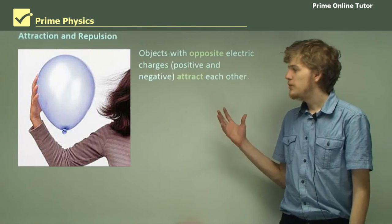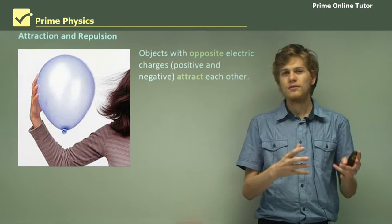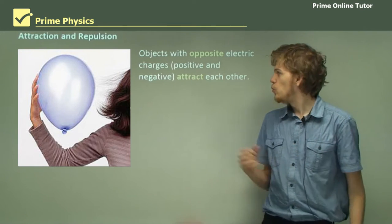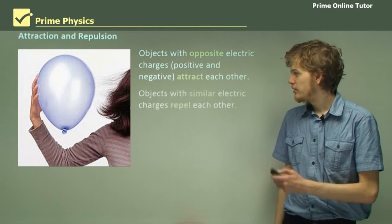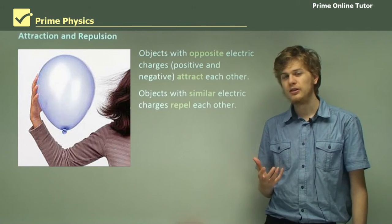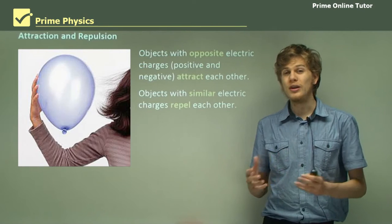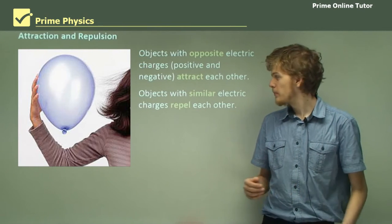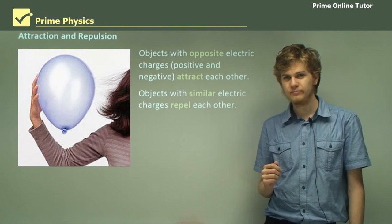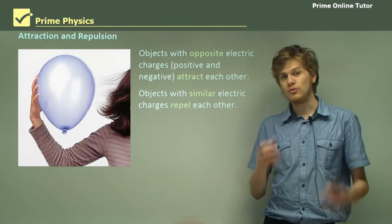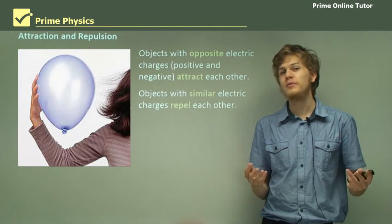Objects with opposite charges — a positive charge and a negative charge — will attract each other. On the other hand, if we have two of the same charge, like a positive charge near a positive charge, or a negative charge near a negative charge, the two objects will repel each other. If you bring them close to each other, each one will experience a force away from the other.